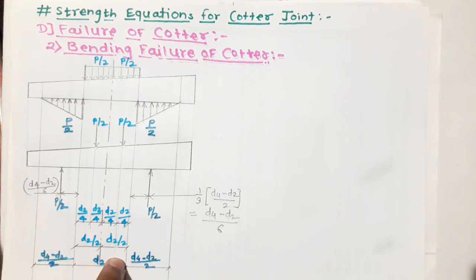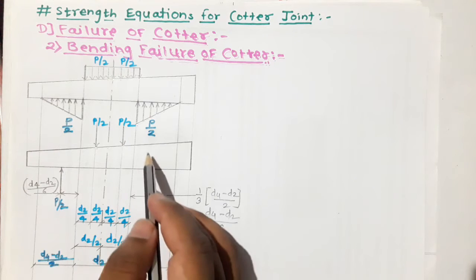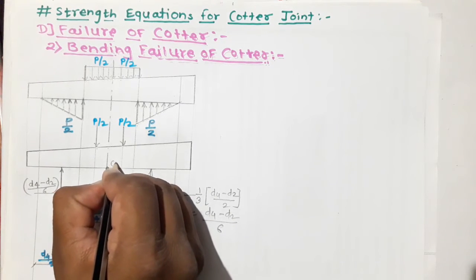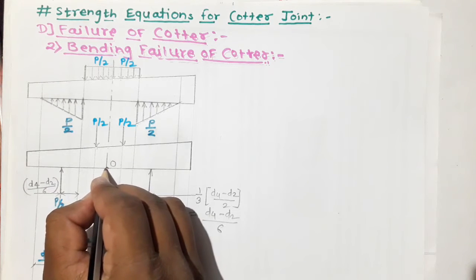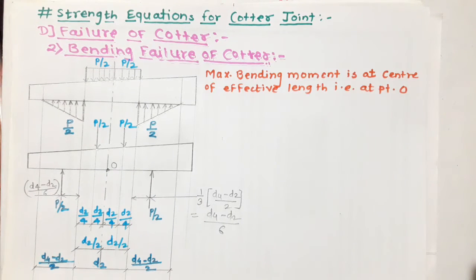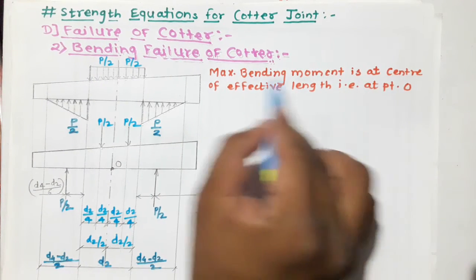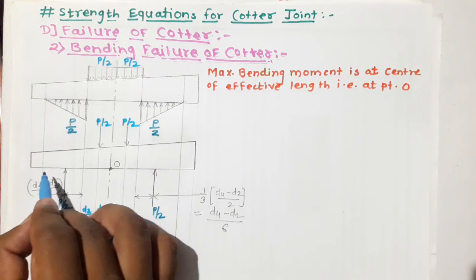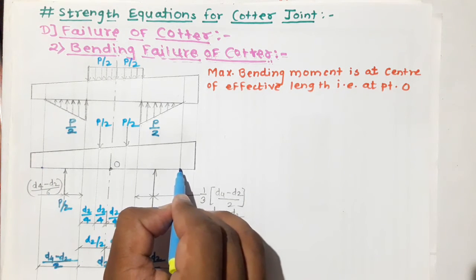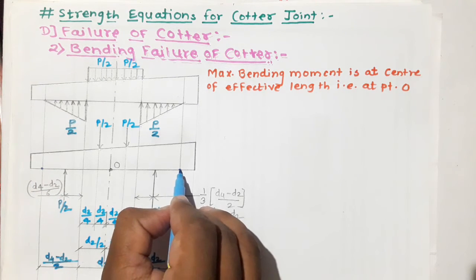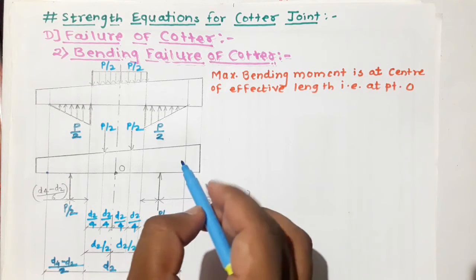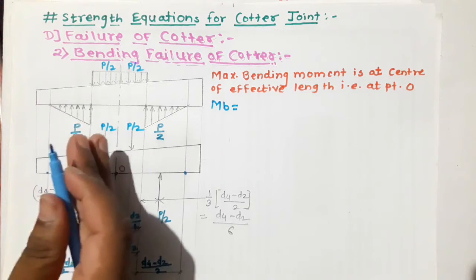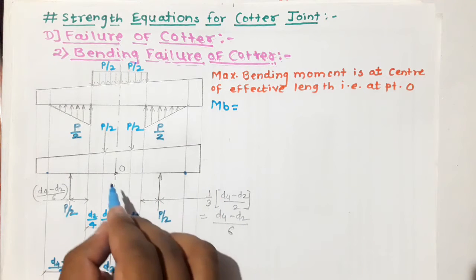Now let us find the bending moment. Since the cotter is treated as a simply supported beam, the maximum bending moment occurs at the center of the effective length, denoted as point O. Let us find this maximum bending moment Mb by considering only the right half portion of the cotter.